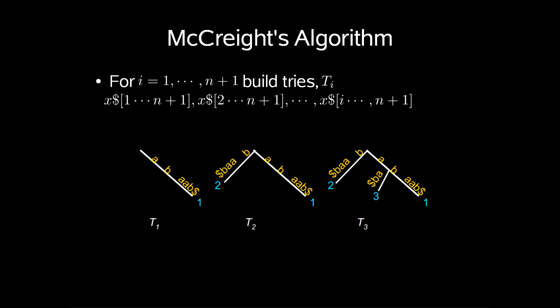Iteratively, for i equals 1 up to n plus 1, we build trees t_i. The trees between 1 and n plus 1 are trees of sequences x[1...n+1], x[2...n+1], and so on up to x[i...n+1].